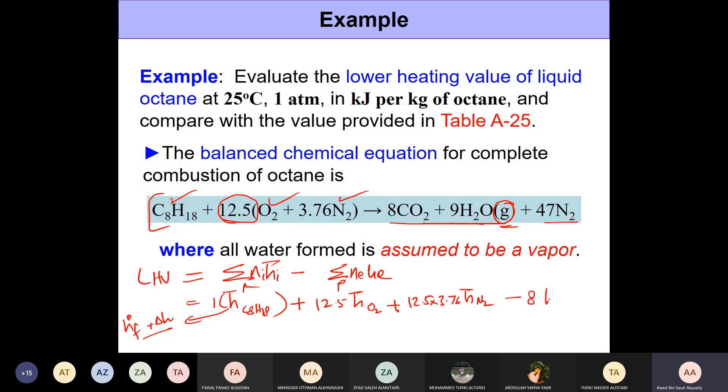Minus the products: minus eight times enthalpy of CO2, minus 9 times enthalpy of water in the vapor phase, minus 47 times enthalpy of nitrogen. This is the simple formula for calculating the lower heating value. Of course we have to evaluate the enthalpies, but if you cannot write this you cannot proceed further. For writing all these mole numbers we need to balance out the chemical equation because we know the combustion products CO2 and H2O for complete combustion.